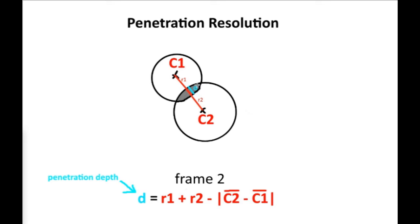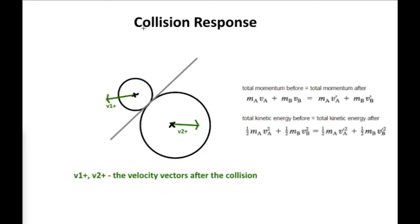The penetration depth can be calculated by adding the radiuses together and subtracting the magnitude of the distance vector — that will be the second algorithm. The third one is the collision response: that's the function that determines the new direction of the ball and the new speed. In other words, it calculates the ball's new velocity vector after the collision.